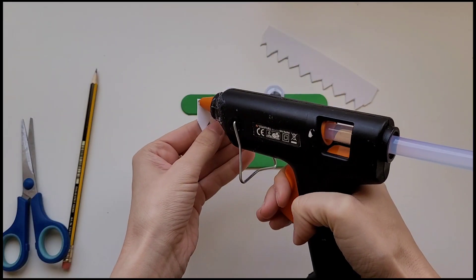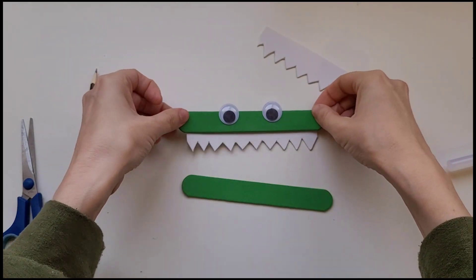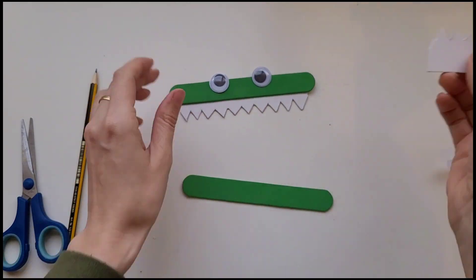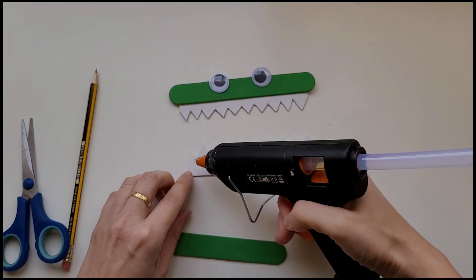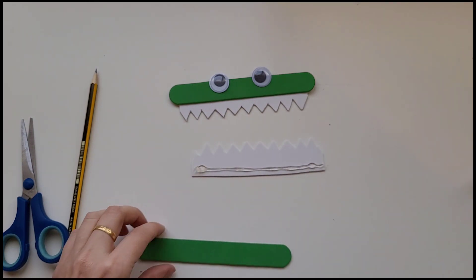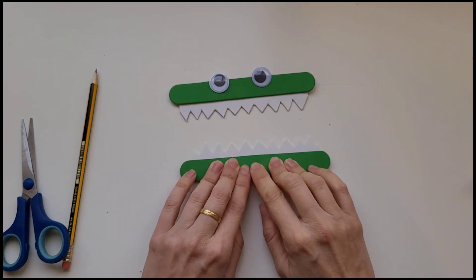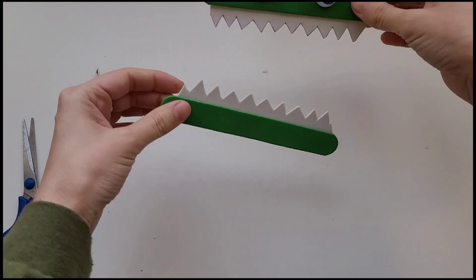Now we're going to use a glue gun to fasten the teeth onto the craft sticks. We're going to fasten them on the back side so that the glue doesn't show. After we fasten both sets of teeth we can now move on to the next step.